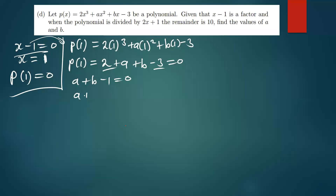We have 2 - 3 = -1, so a + b - 1 = 0, meaning our first equation is a + b = 1. Now we need a second equation so we can solve simultaneously.